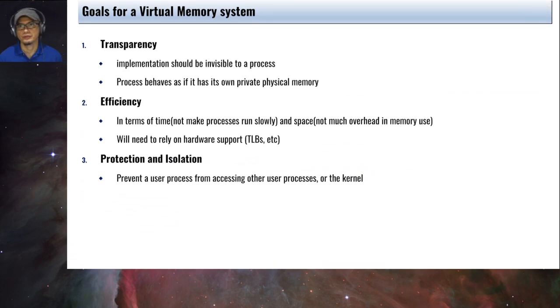So what are the goals for a virtual memory system? The first one is called transparency. The idea is to make sure that the implementation should be invisible to the process. That means that the process doesn't have to do anything, the program doesn't have to do anything. It can access any memory it thinks it can. And it seems like a process owns the entire physical memory, even though that is not the case.